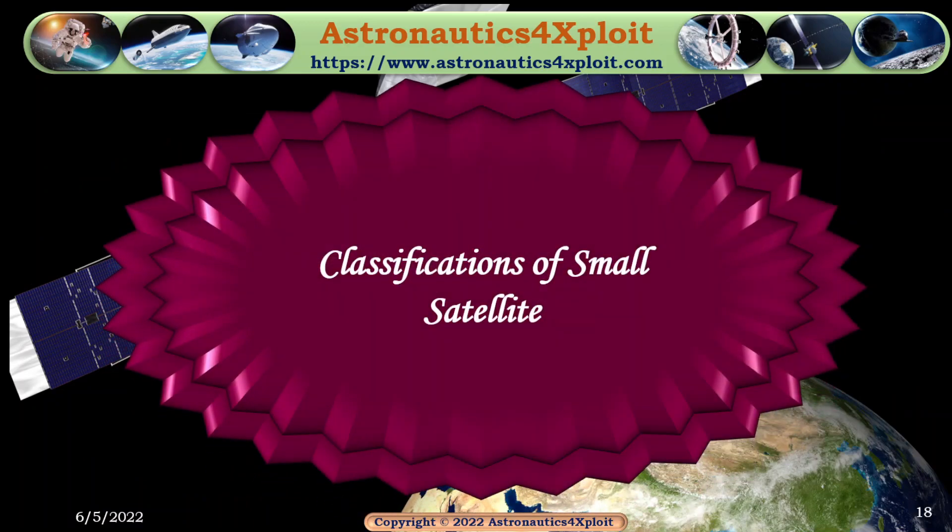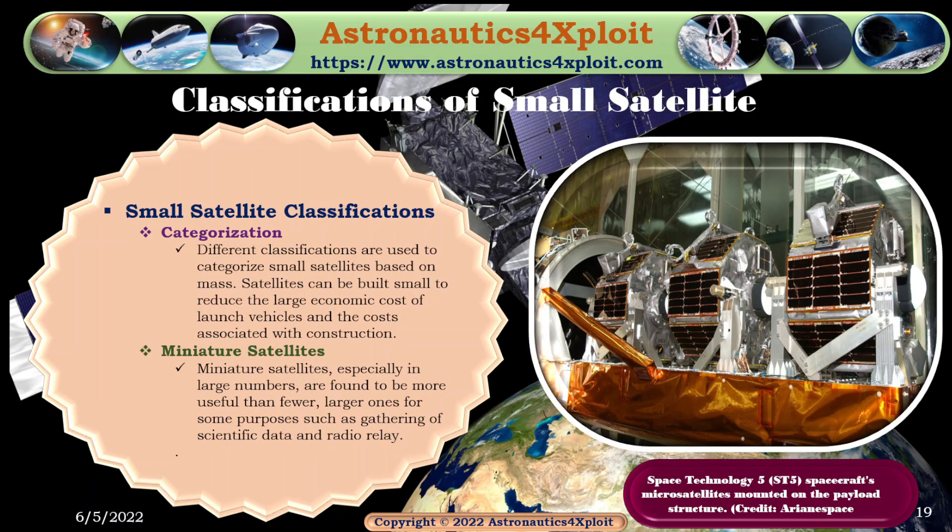Different classifications are used to categorize small satellites based on mass. Satellites can be built small to reduce the large economic cost of launch vehicles and the costs associated with construction. Miniaturized satellites, especially in large numbers, are found to be more useful than fewer larger ones for some purposes such as gathering of scientific data and radio relay. This picture shows space technology microsatellites mounted on a PLO structure.